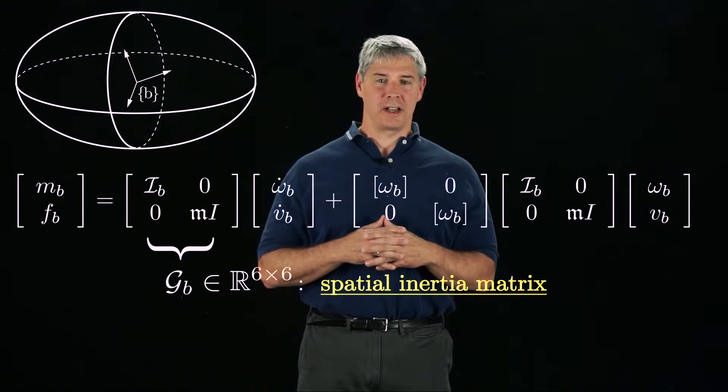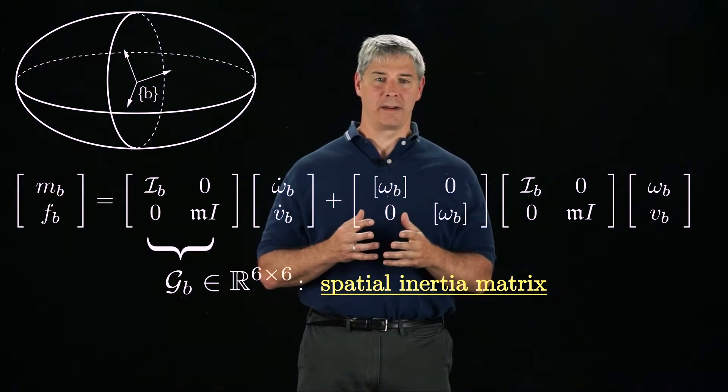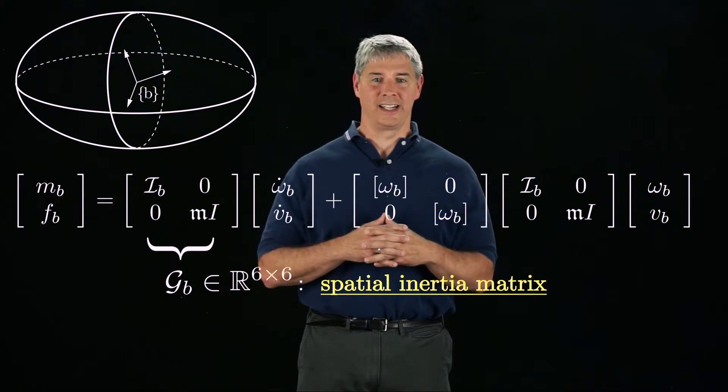The top left 3x3 submatrix is the inertia matrix IB, and the bottom right 3x3 submatrix is a diagonal matrix, the mass of the body multiplied by the 3x3 identity matrix.